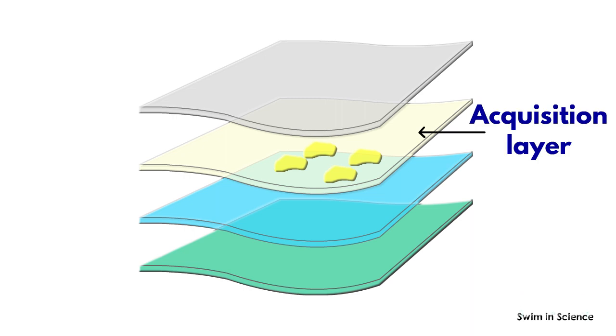The second layer is the acquisition layer which is composed of modified cellulose and polyester.